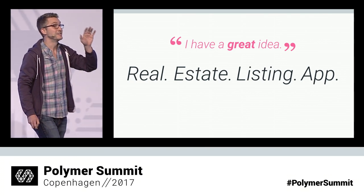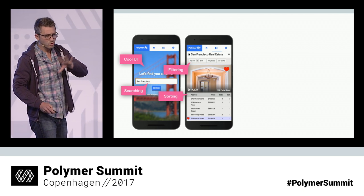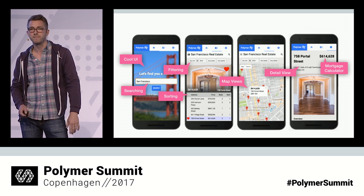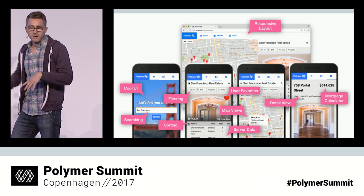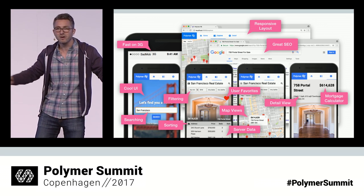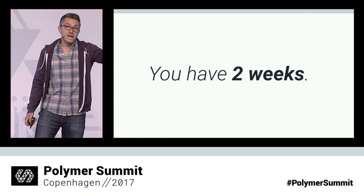Imagine this scenario: it's a Monday morning, you're sitting in your office minding your own business, and your boss comes barging in — kind of a jerky boss, maybe like Matt. He says, 'I've got a great idea, I know how we're all going to get rich. I need you to build a real estate listing app.' It's going to have a slick, cool user interface. Users can search, get results in a nice list with sorting and filtering, switch to a map view with pins, go to a detail view with a mortgage calculator. Data pulled from a server, users can log in and bookmark homes, responsive layout for all form factors, super fast on 3G, amazing SEO, accessible and international. And you have two weeks to get it done.